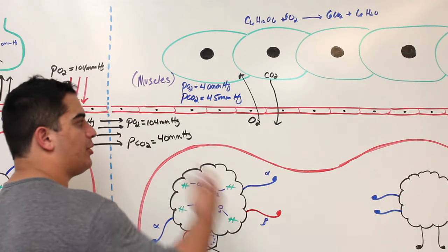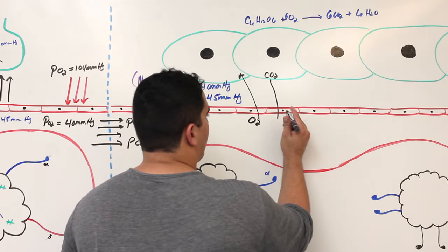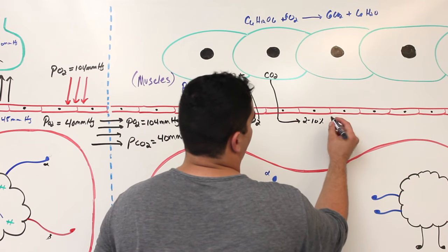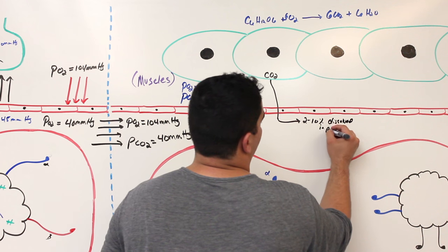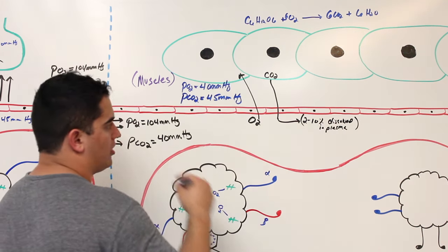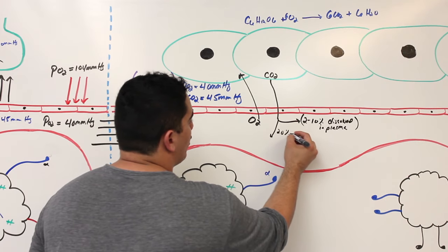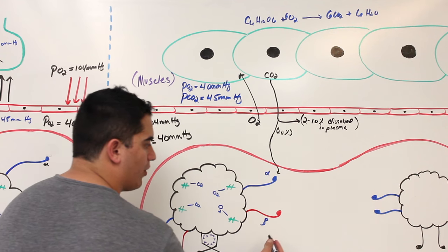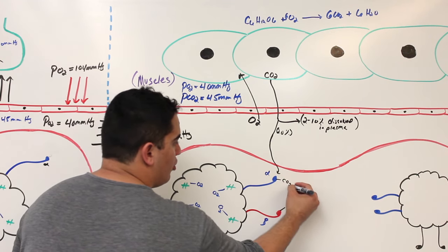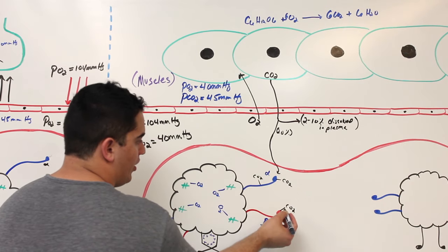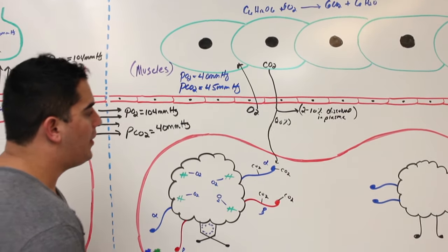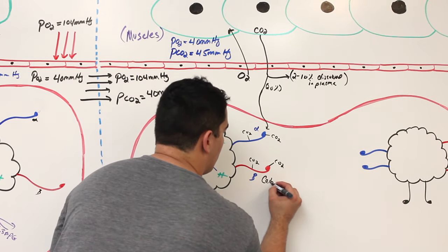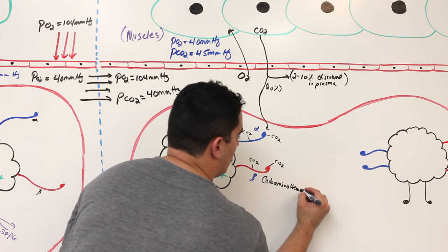Of the CO2 entering the blood: 2 to 10% is dissolved in blood plasma. About 20% binds onto the amino acids of the alpha or beta globin chains — this is carboaminohemoglobin. CO2 molecules bind to amino acids on any of the different globin chains.